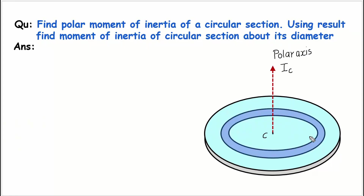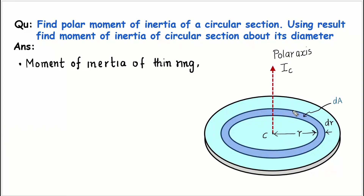To find the polar moment of inertia, I have considered a thin ring taken at distance r from the center of the circular disc, and the thickness of the ring is infinitesimally small, that is dr. The area of this thin ring is very small, so I call it dA. I have considered a ring-shaped small area dA at distance r from the polar axis. The moment of inertia of this thin ring, by definition, is distance squared times area: r² dA.